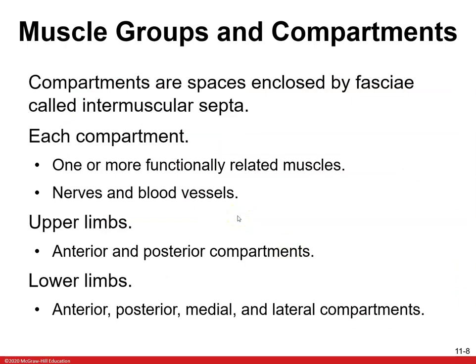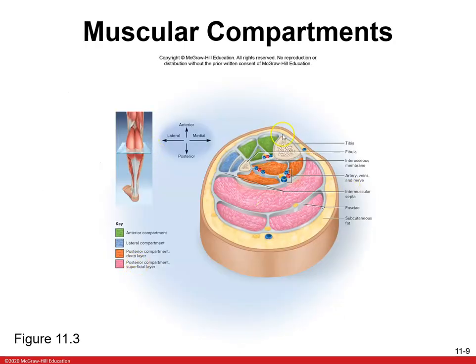Muscle groups and compartments: compartments are spaces enclosed by fascia called intermuscular septa. Each compartment contains one or more functionally related muscles, along with a whole bunch of nerves and blood vessels. You have them in your upper limbs and lower limbs. The reason the body is divided into compartments is so that if there's an injury, they can compartmentalize and hopefully limit the destruction or injury to one area — anterior, lateral, and posterior compartments.